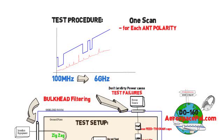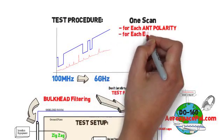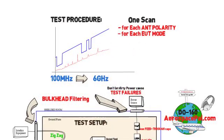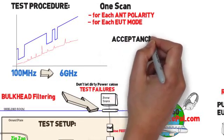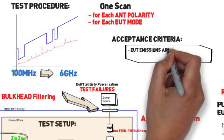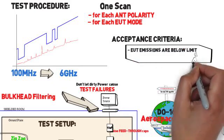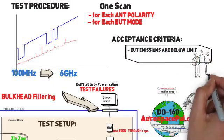DO-160 says you should consider operating modes that produce the highest emissions, but since this scan takes such a minimal amount of time, I would just suggest scanning in all modes so you can save yourself the trouble of justifying it. Once each scan is complete, review the data of your EUT emissions and ensure that you're below the limit and that you're passing. You've just completed one half of section 21 of DO-160 radiated emissions.